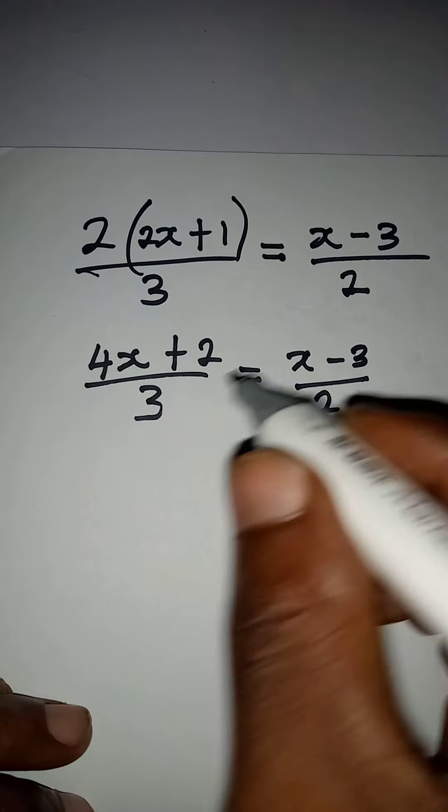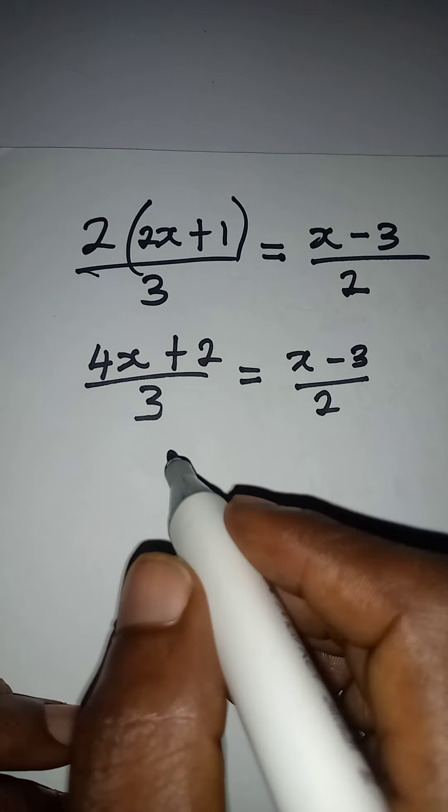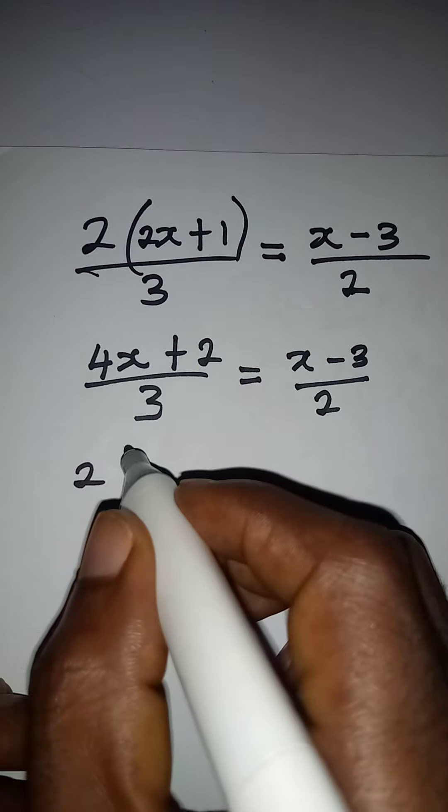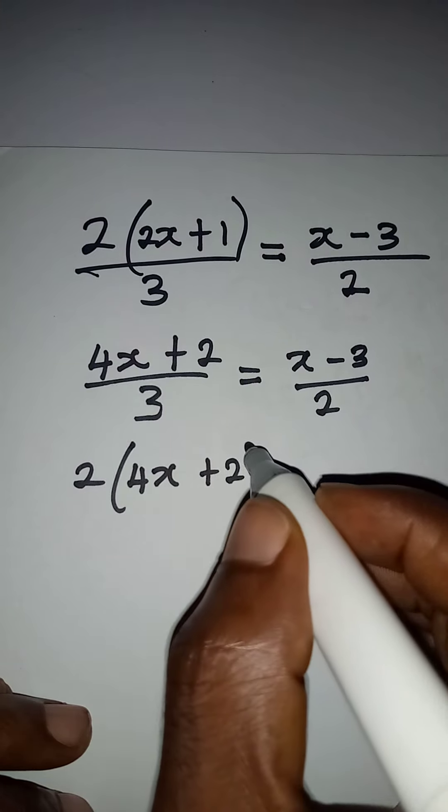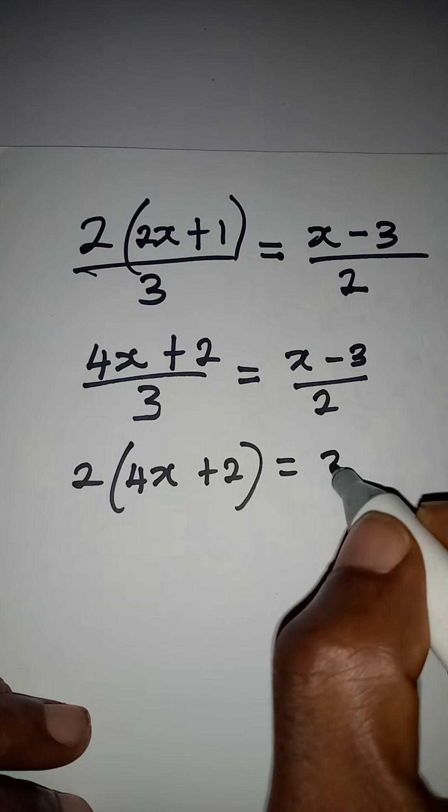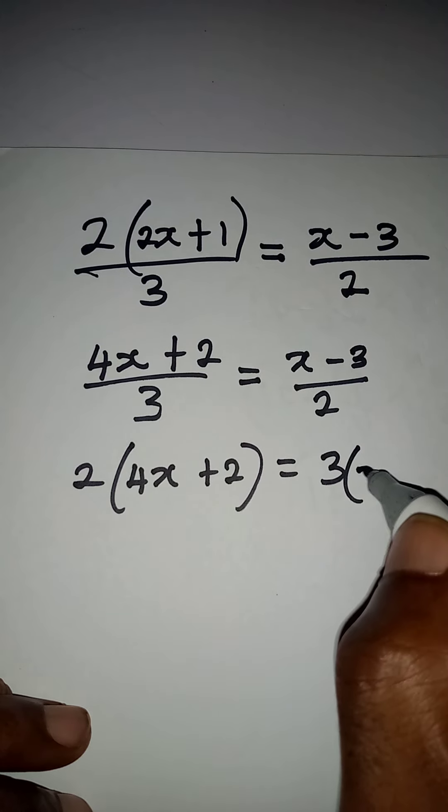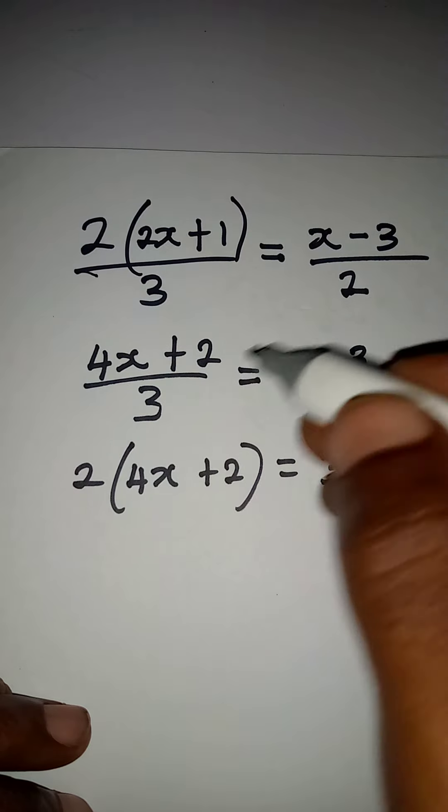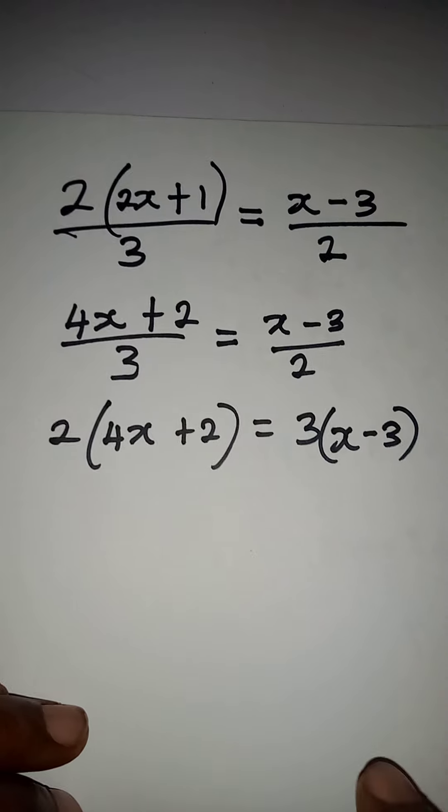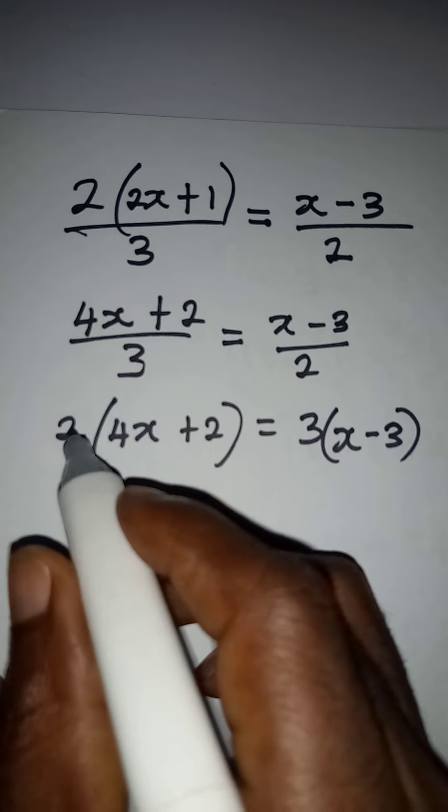Now what I'm going to do is to cross multiply since we have two fractions here. So I'll have 2 multiplying 4x plus 2, then equal to 3 multiplying x minus 3. Okay, so this is what I've done, cross multiplication.